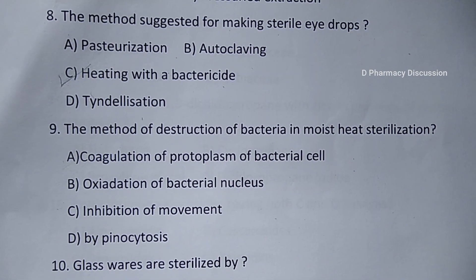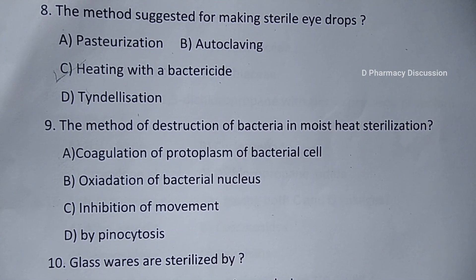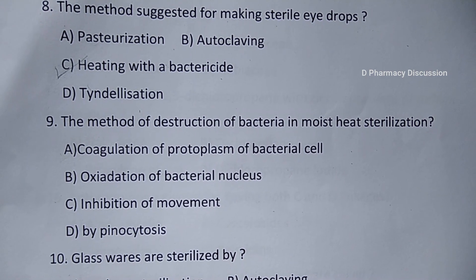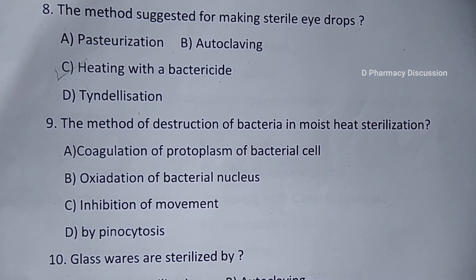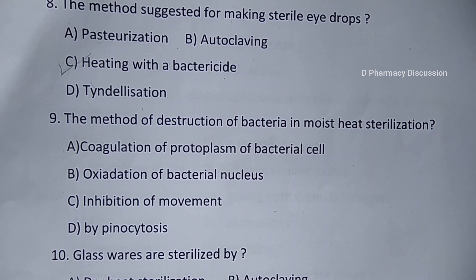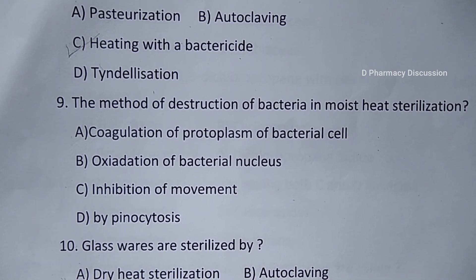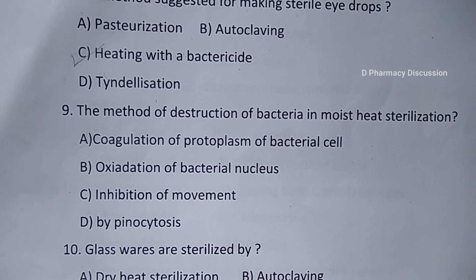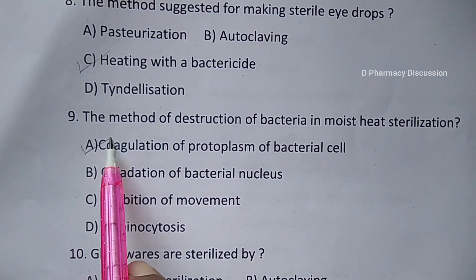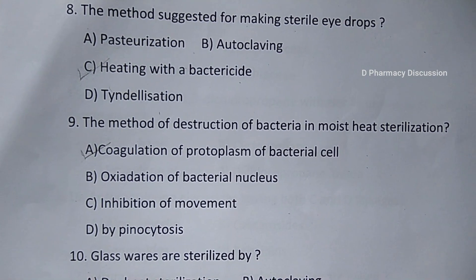Question number 9: the method of destruction of bacteria in moist heat sterilization. Option A. Coagulation of protoplasm of bacterial cell, B. Oxidation of bacterial nucleus, C. Inhibition of movement, D. By pinocytosis. Correct answer is option A, that is coagulation of protoplasm of bacterial cell.